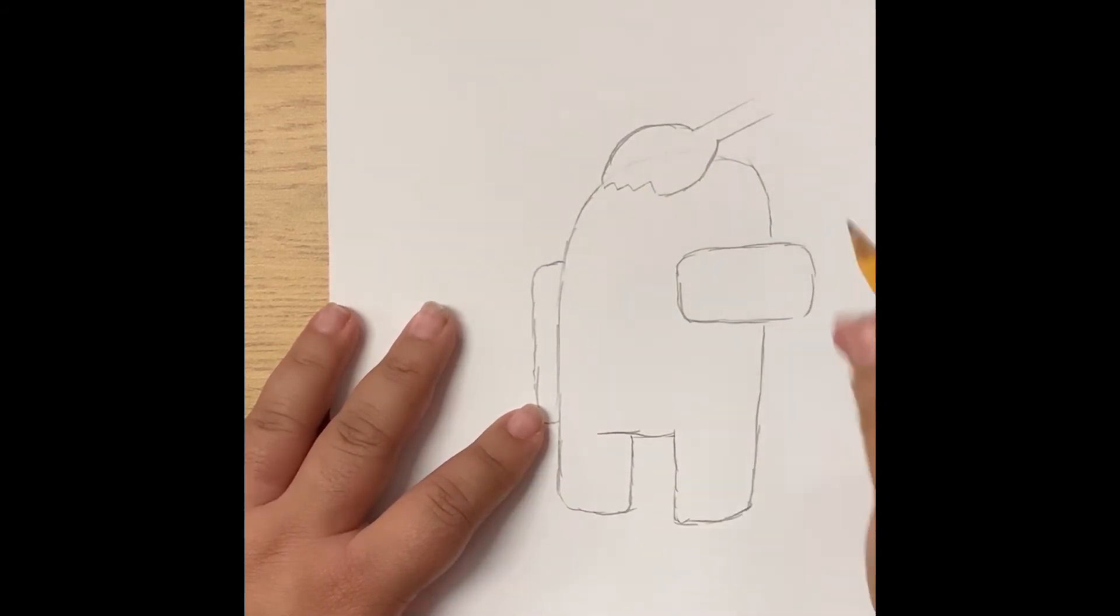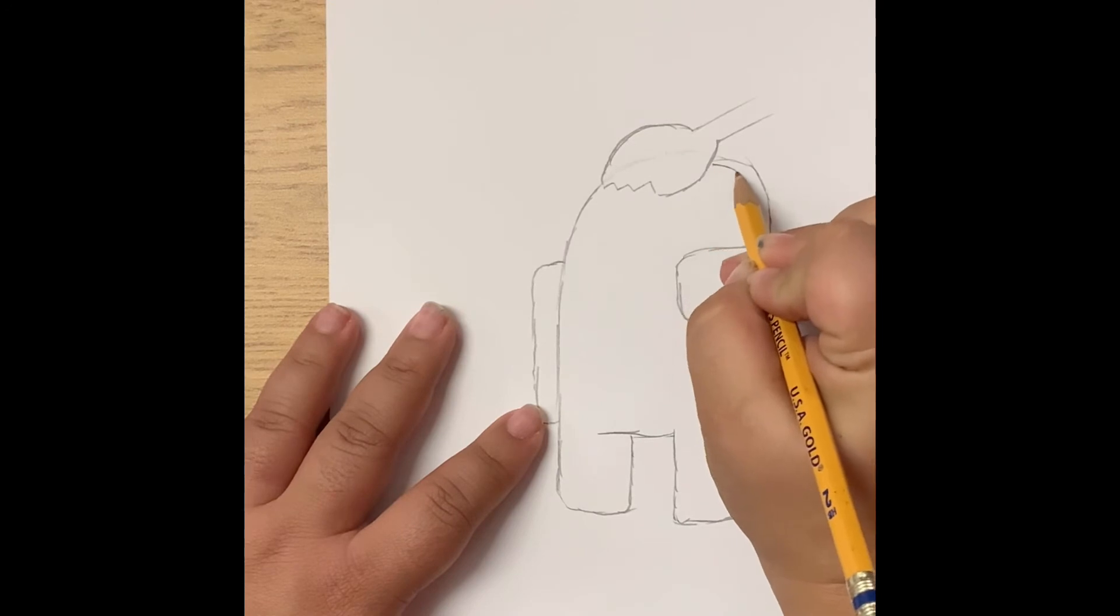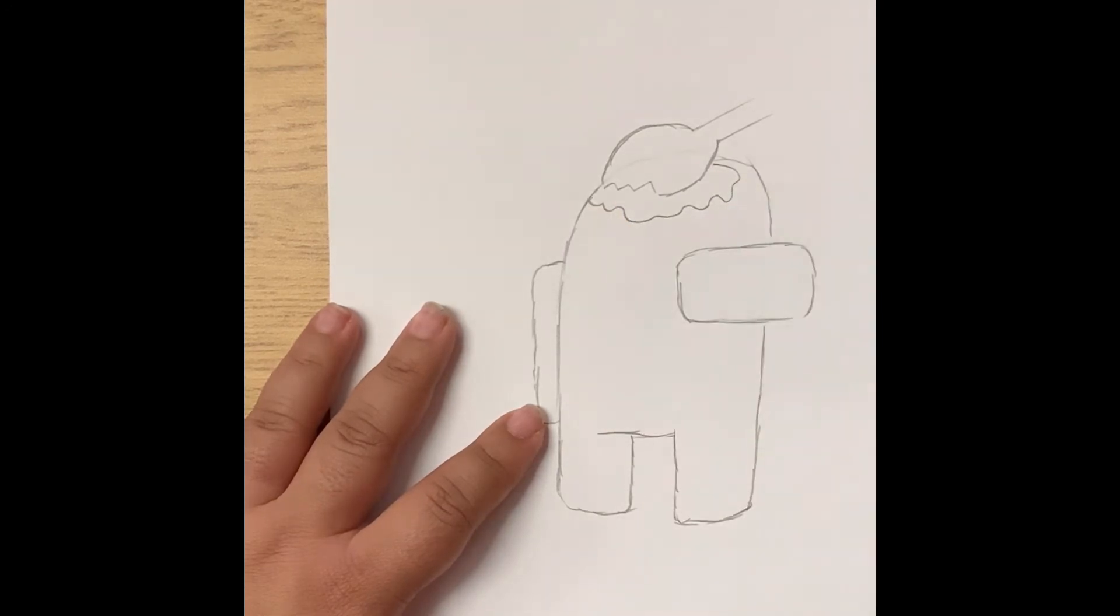So that is the very basic version of the turkey leg. Now we can put a wavy line to be some gravy for your turkey, and then of course we can put the bone sticking out to be the actual turkey leg.